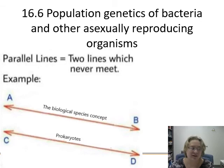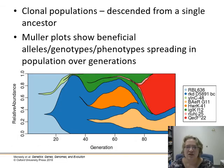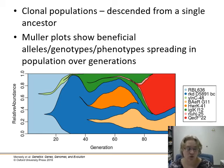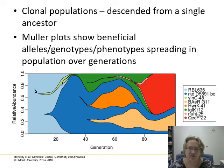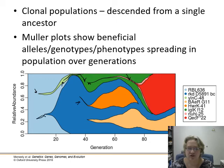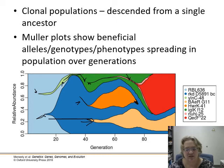Finally, population genetics of bacteria and other asexually reproducing organisms. Bacteria are clonal populations descended from a single ancestor; mutations arise and either disappear or confer evolutionary benefit and are retained. A Muller plot shows how beneficial alleles spread in a clonal population: what starts as one genotype diversifies as mutations arise — some spread widely, some disappear, and you can watch lineages branch and compete over time, tracking the mutations via these visually interesting plots.